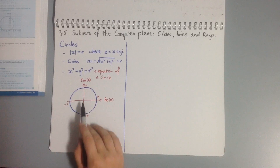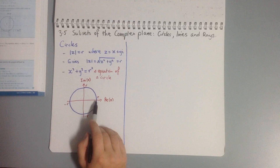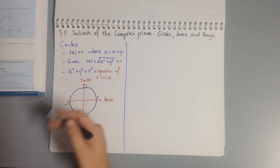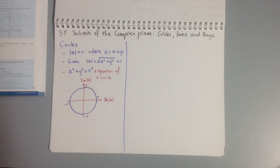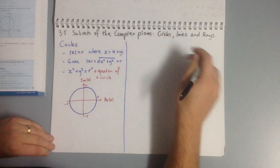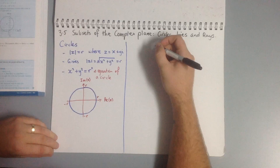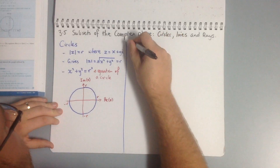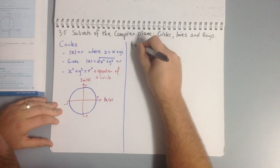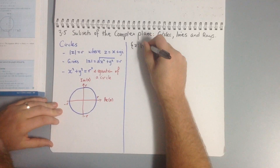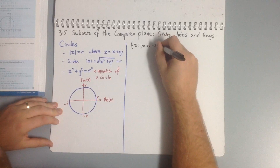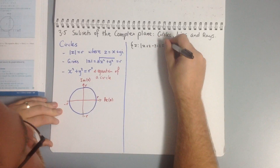When we draw it, we see that we are centered at the origin and have a radius of r units. We can also have translations with our circle, which we'll see in this worked example. We're looking at: determine the Cartesian equation and sketch the graph of z defined as the modulus of z plus 2 minus 3i equals 4.